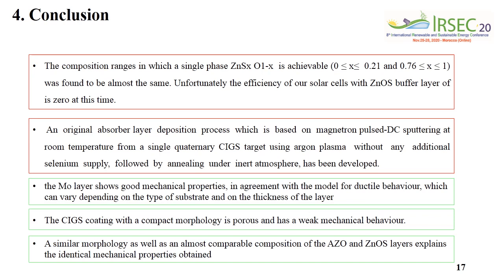The efficiency of our solar cells with the ZnO:S buffer layer is zero at this time. An original absorber layer deposition process, based on multi-target DC sputtering followed by annealing under inert atmosphere, has been developed. The MoSe layer shows good mechanical properties in agreement with the model for ductile behavior. The CIGSe coating is porous and has a weak mechanical behavior. A similar morphology, as well as an almost comparable composition of the AZO and ZnO:S layers, explains the analogous mechanical properties of ZnO:S.